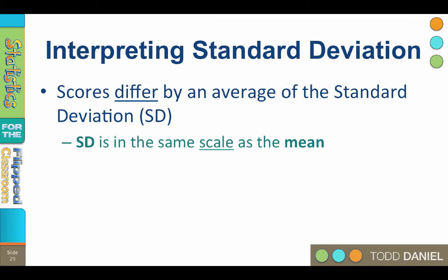We can interpret our data using the standard deviation. Scores differ by an average of a standard deviation. If the mean is 6 and the standard deviation is 2, then one standard deviation above the mean is 6 plus 2, or 8. Two standard deviations above the mean would be 6 plus 2 plus 2, or 10. One standard deviation below the mean would be 6 minus 2, or 4. Plus, the standard deviation is in the same scale as the mean, not squared units like variance.